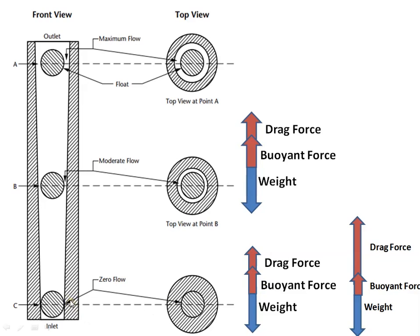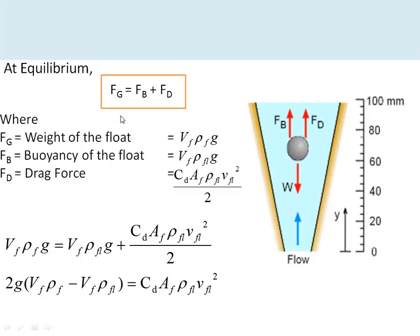When there is an increase in flow rate, it disturbs the equilibrium. The increase in flow rate increases the drag force, which moves the float upward — since the upward forces now dominate — until it settles at a new position where the upward and downward forces are again in equilibrium. At equilibrium, buoyancy force plus drag force equals the gravitational force, i.e., the weight of the float.